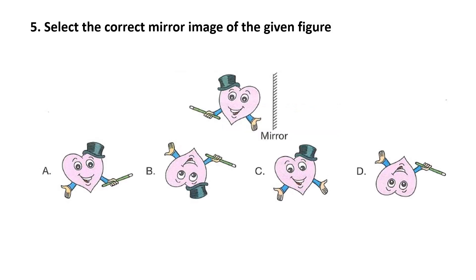Question number 5. Select the correct mirror image of the given figure. The answer is option A. In option B, this is not a mirror image — it's a water image. Option D is also upside down and the cap is missing in option D, so these are cancelled. In option C, there is no stake in the hand of the figure, so option C is also cancelled. The answer is option A.